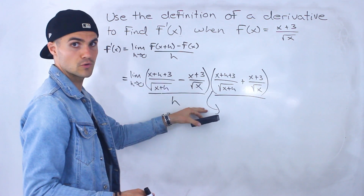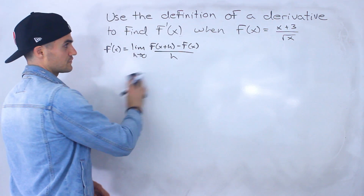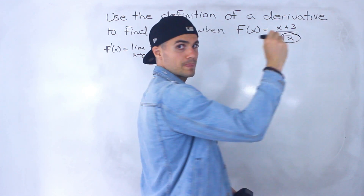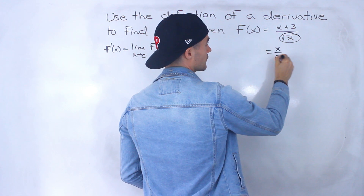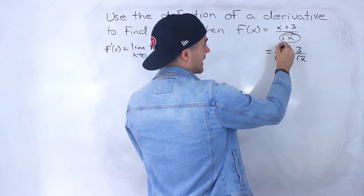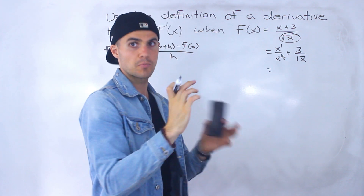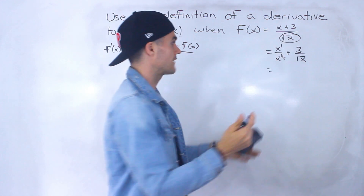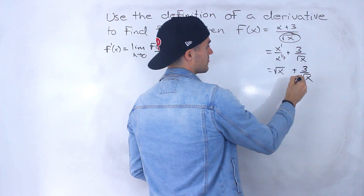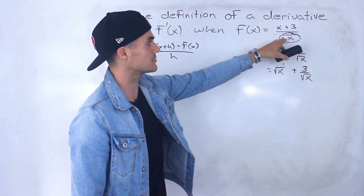I'm going to do it a different way — you could try it this way if you want and see if you get the same answer. What I recommend doing first is noticing that we can split this function up. There's one term in the denominator, so we can rewrite this as x over the square root of x plus 3 over the square root of x. And x over the square root of x is like x to the power of 1 over x to the half — same base, so subtract exponents. 1 minus a half is a half, so we get square root of x plus 3 over root x.